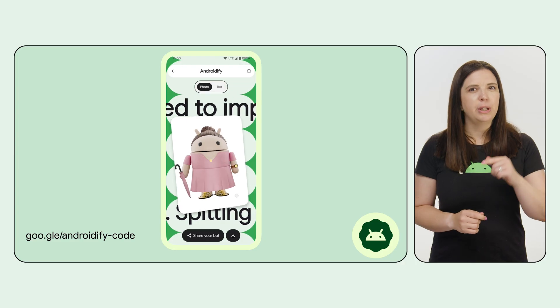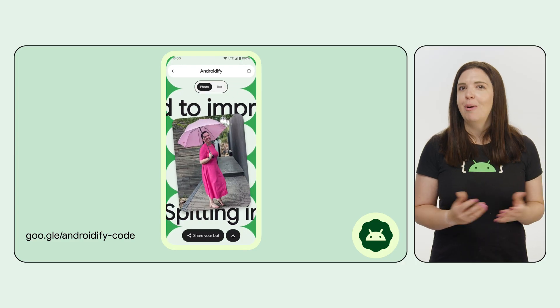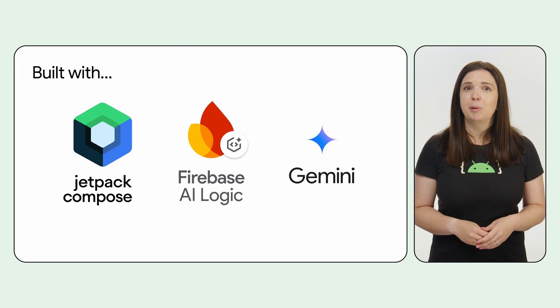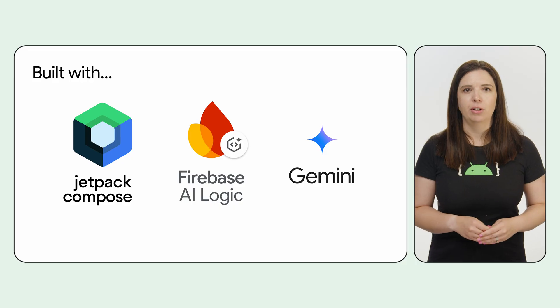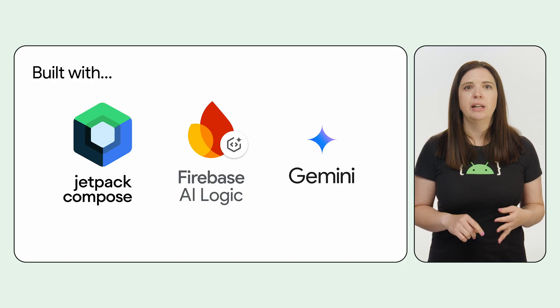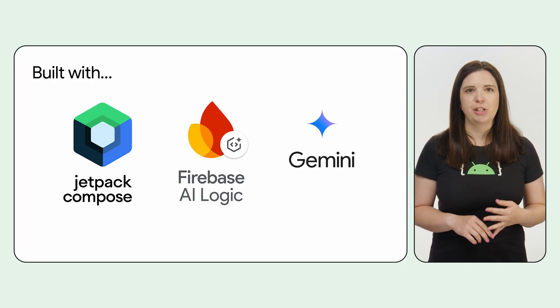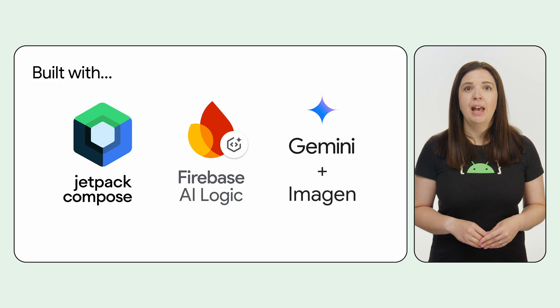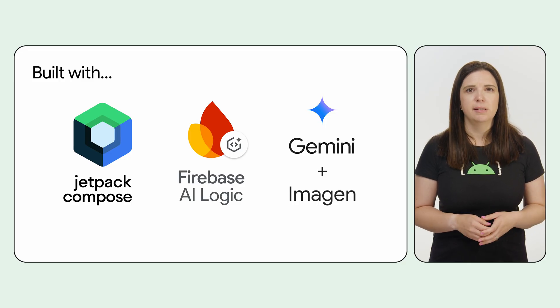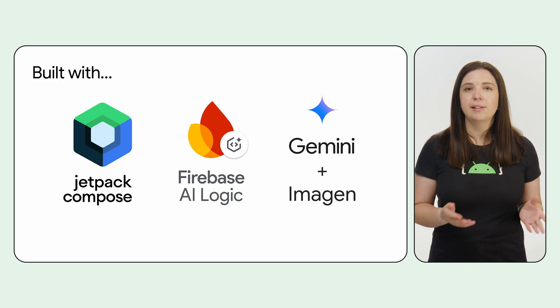But you are here to learn more about how it works behind the scenes, so let's get into it. The app is built with four main technologies: Jetpack Compose, Firebase AI Logic, Gemini, and Imagine. And if you're interested in exploring how these technologies communicate behind the scenes, check out our solution on the Android developer's site.